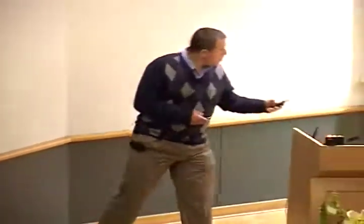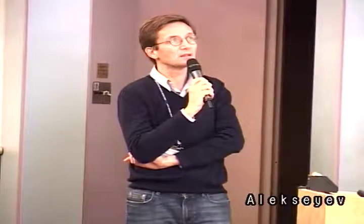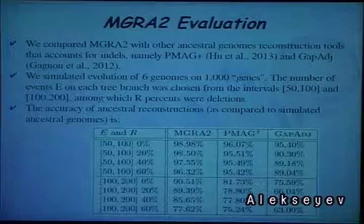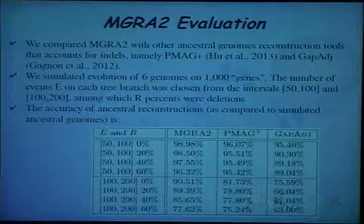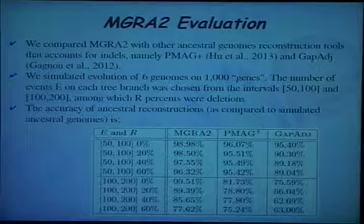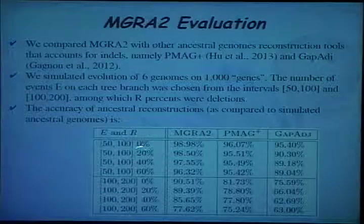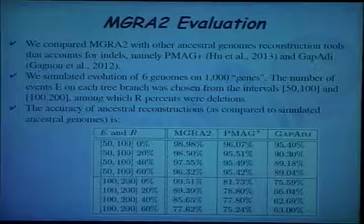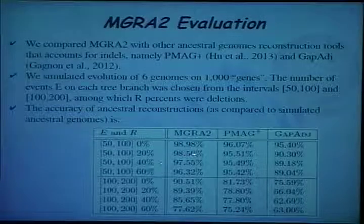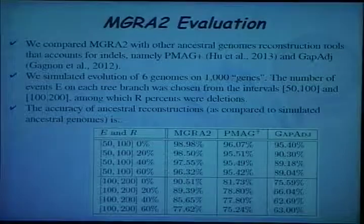One more question: how do you simulate deletions and duplications in your 1,000-gene benchmark? The rate of deletions will impact the difficulty. We simulated randomly — R stands for the percent of deletions and the rest are rearrangements. Each time we decide whether to perform either a rearrangement or a deletion; if deletion, we delete a random gene. We chose deletion percentages of 0, 20, 40, and 60%. The quality somewhat drops as the percent of deletions increases, and the same holds for the other set of tests.